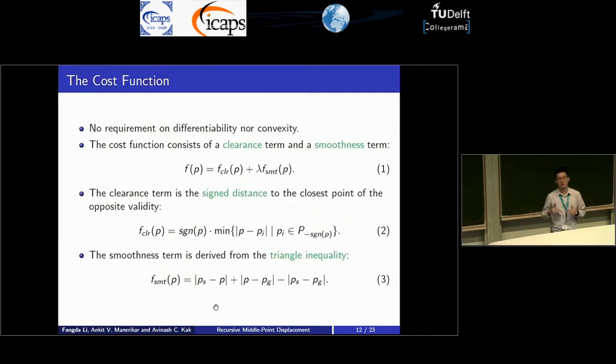The cost function really can be given arbitrarily. It has no requirement on differentiability because we are evaluating at discrete points, nor convexity. The cost function we have chosen is a simple combination of a clearance term and a smoothness term. The clearance term is the signed distance from a point to its closest point of the opposite validity. It's very intuitive and can be pre-calculated. The smoothness term is an interesting term here. We choose it to be very simple, very intuitive. It is directly derived from the triangle inequality. How you can interpret the smoothness term is that it serves as L1 regularization term that encourages smoother and shorter paths.